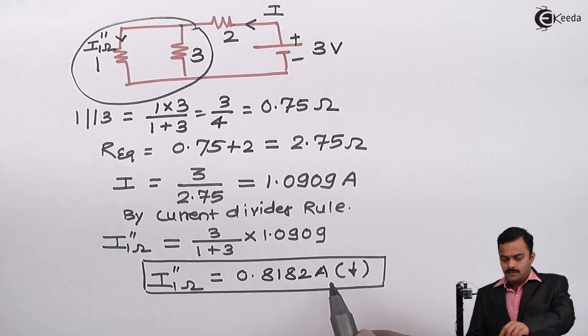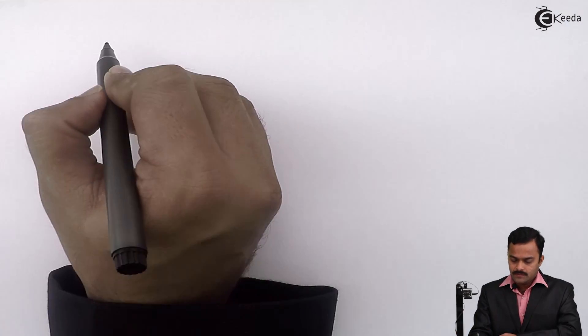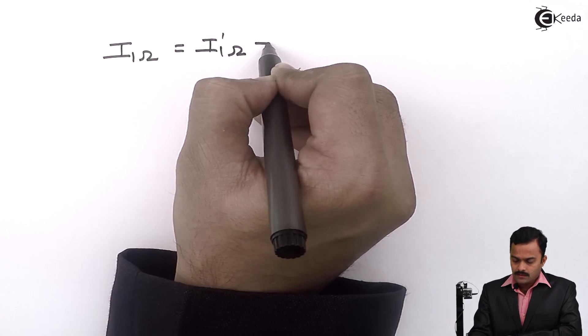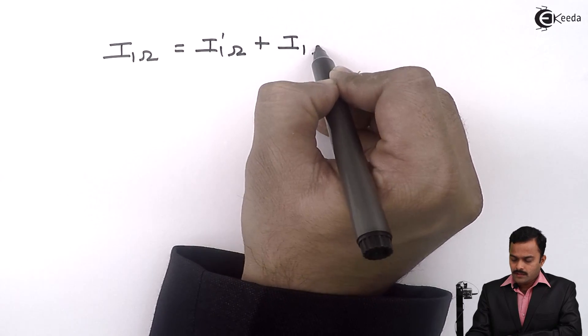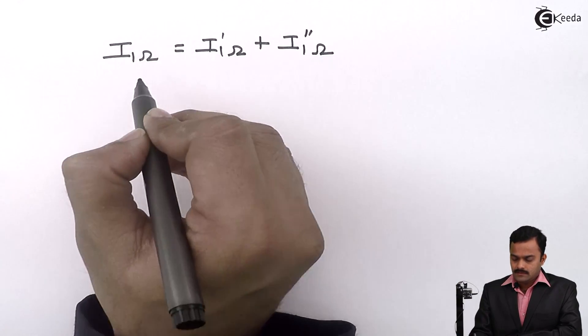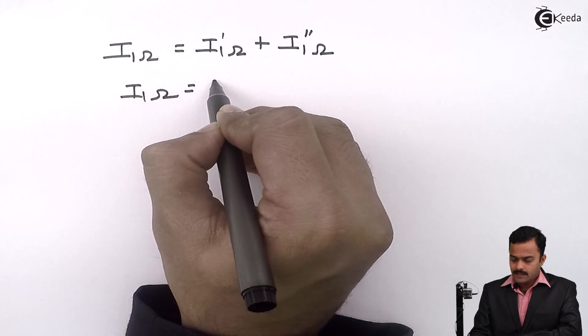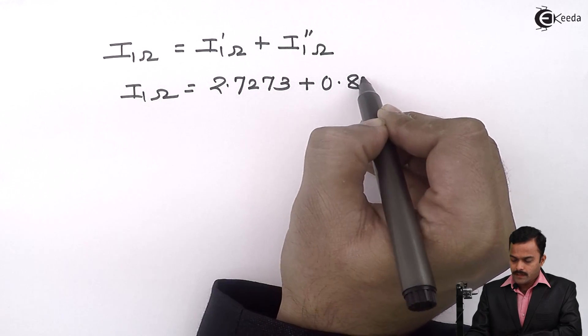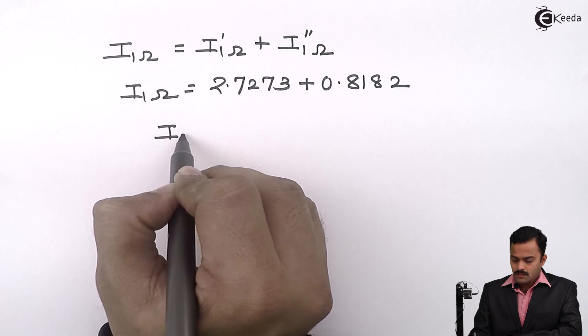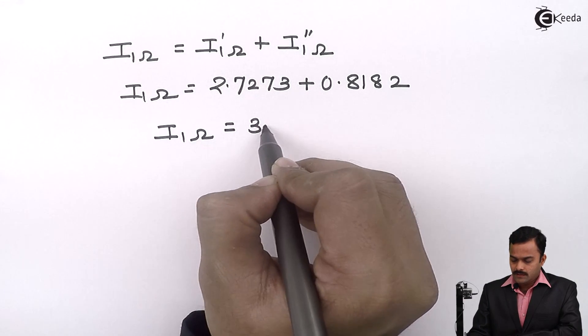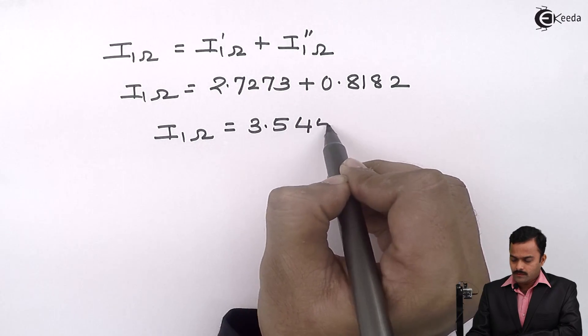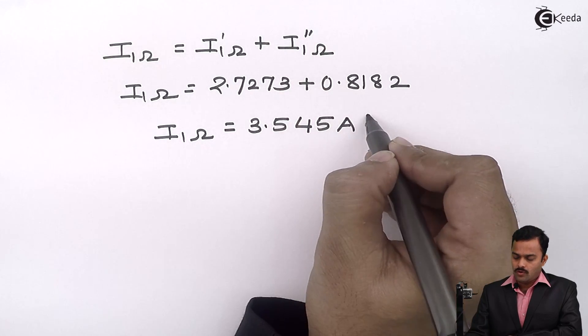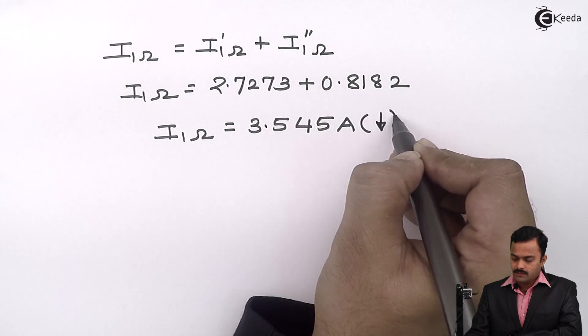Now, as per the statement of superposition theorem, total response or total current will be the sum of currents because of individual sources. If I add, I will get 2.7273 plus 0.8182. The answer will be 3.545 ampere. Both the currents are downward. So obviously, resultant will also be downward.